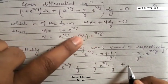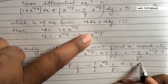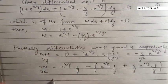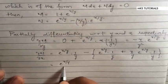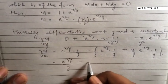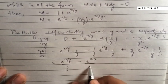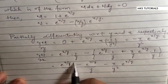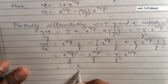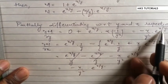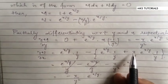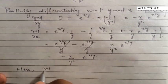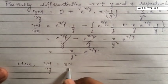Differentiating N with respect to x: the terms simplify, and after cancellation we get minus (x/y²) · e^(x/y). Both ∂M/∂y and ∂N/∂x come out to be the same value, confirming the equation is exact.